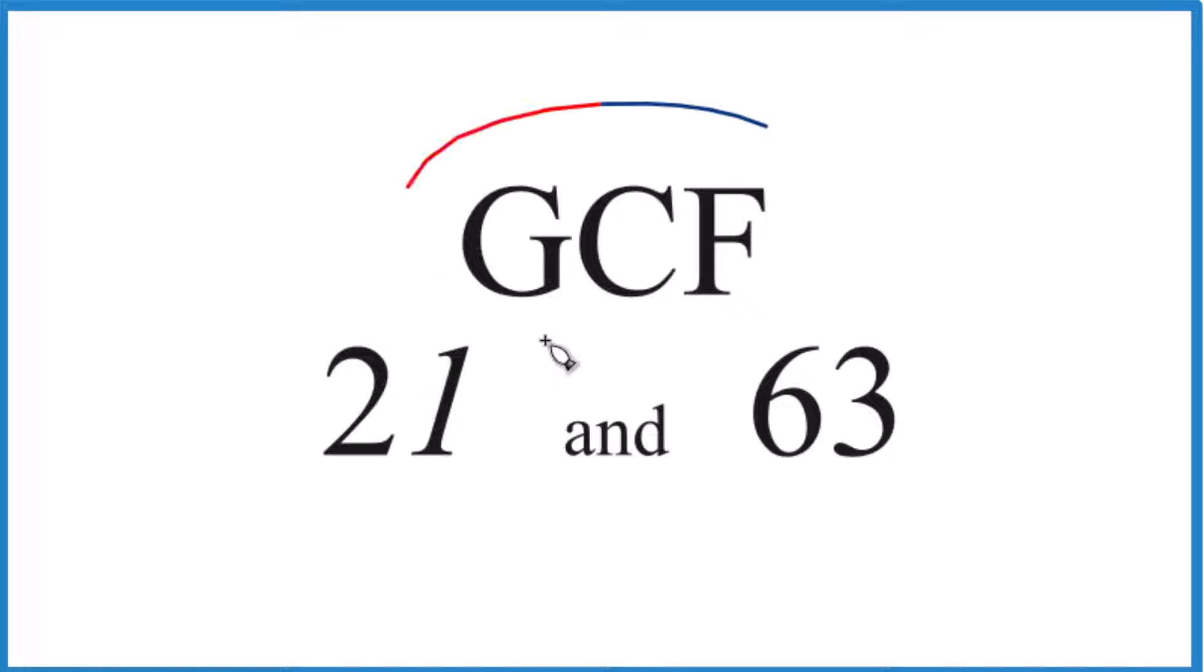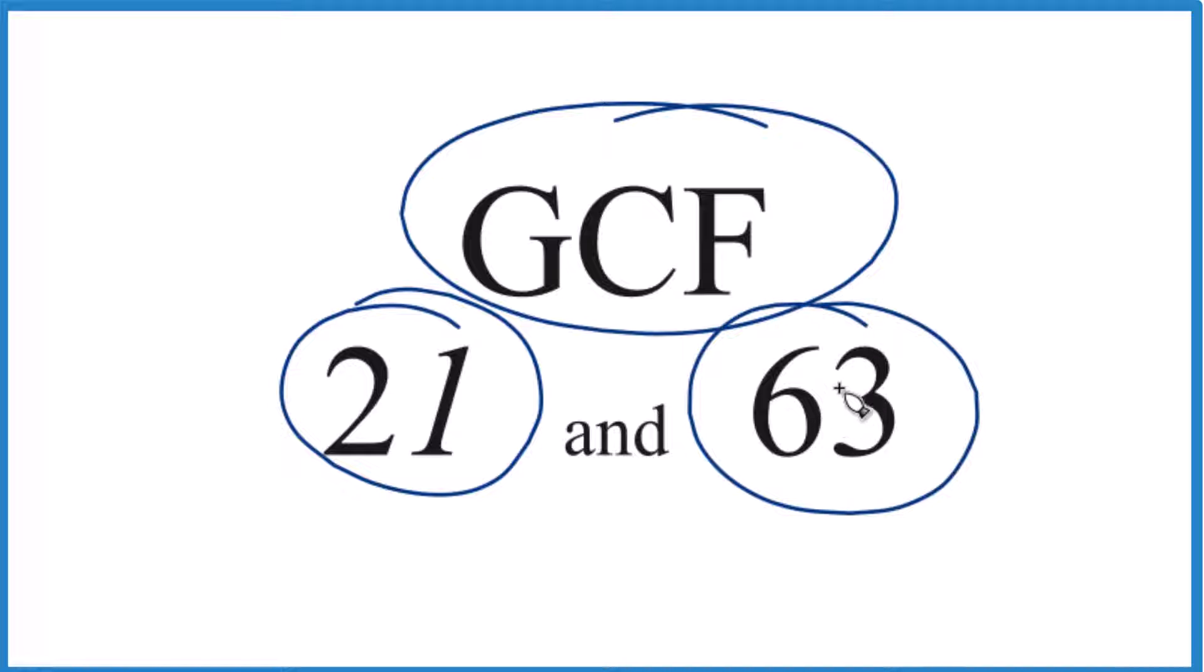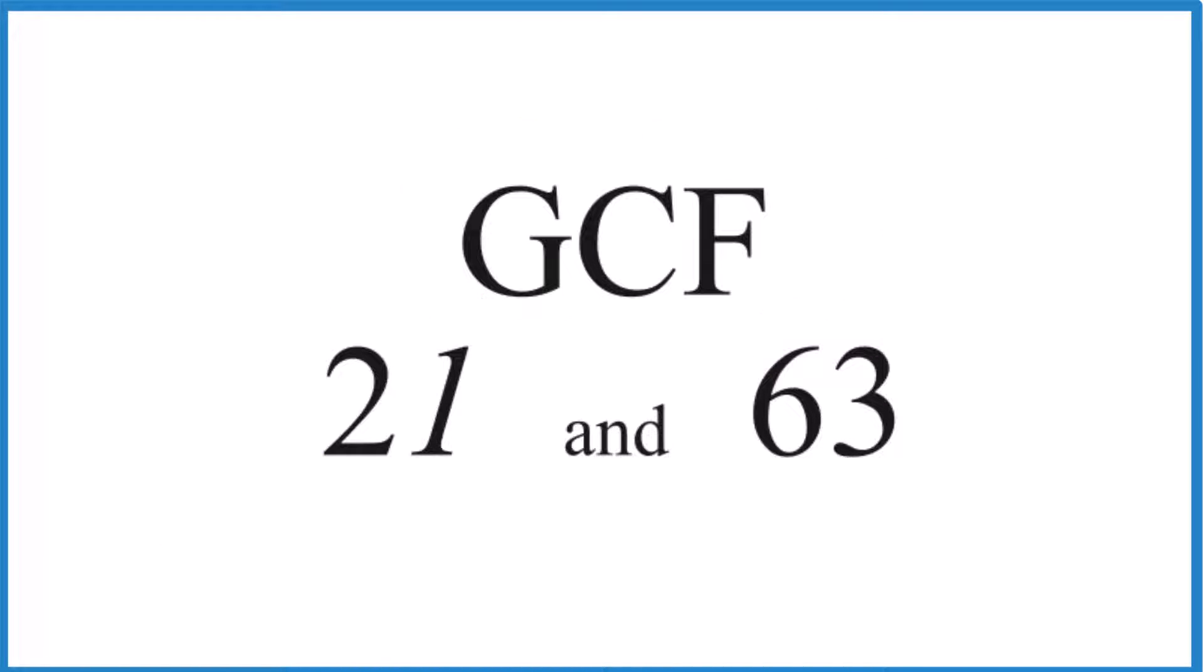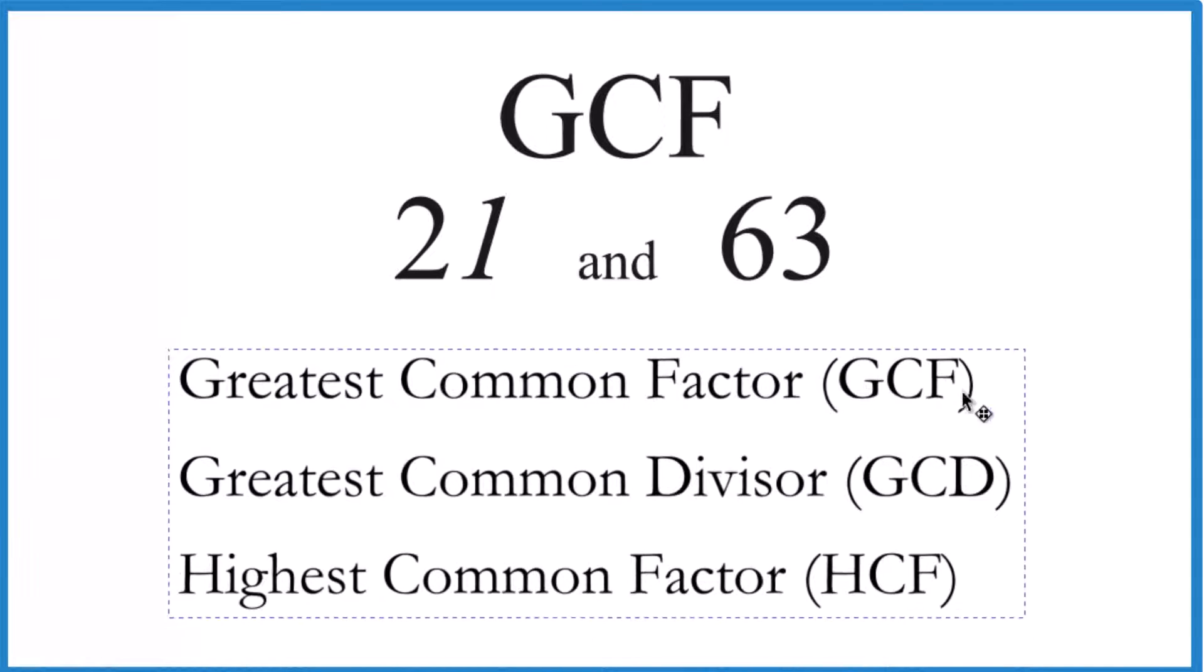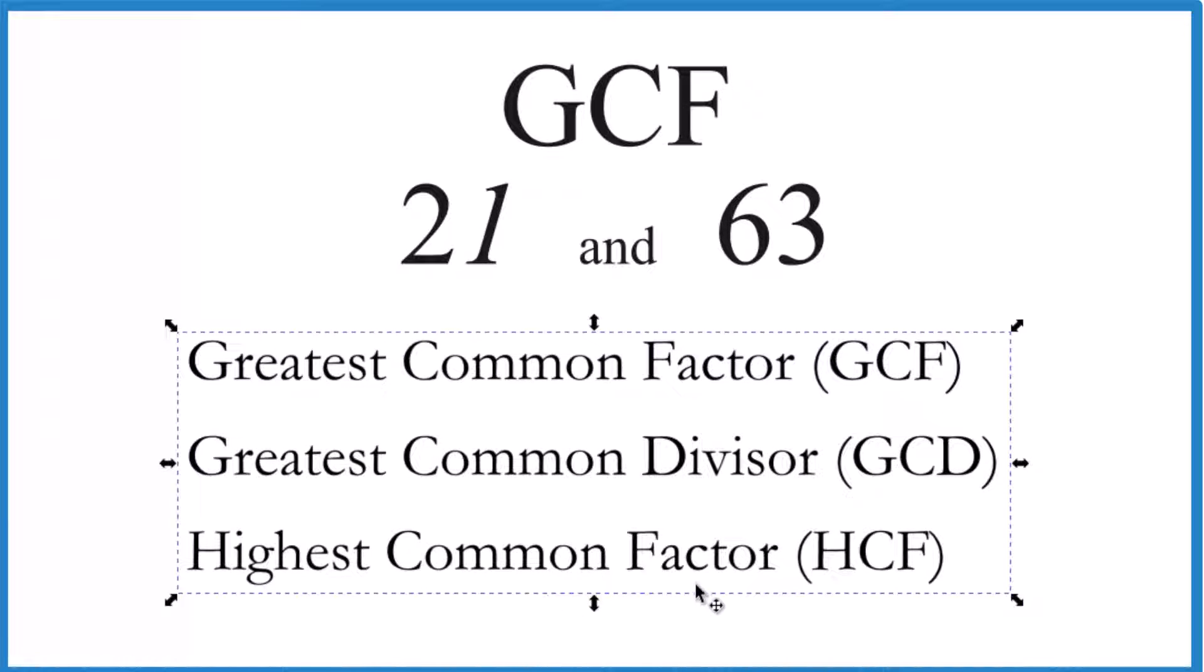Here's how you find the greatest common factor between 21 and 63. The greatest common factor, sometimes called the greatest common divisor or the highest common factor, are all the same thing.